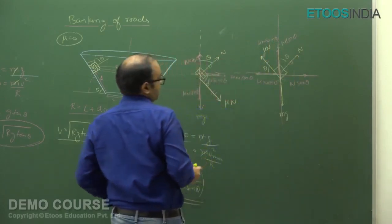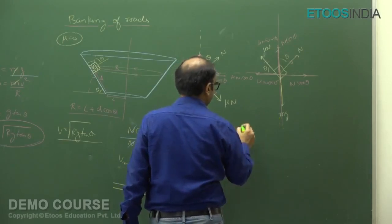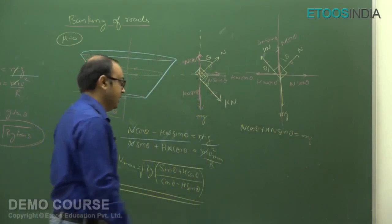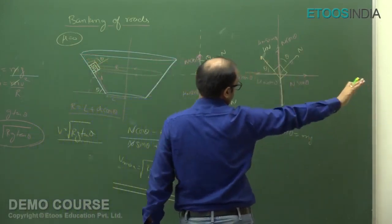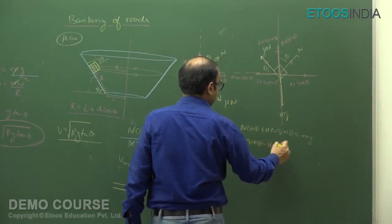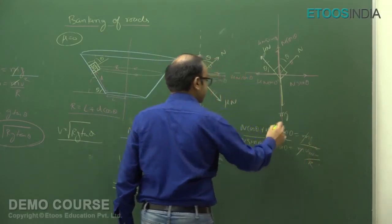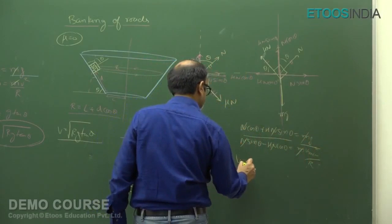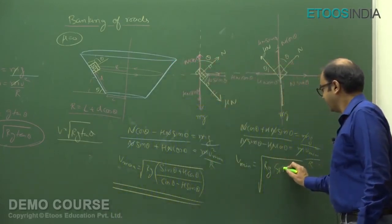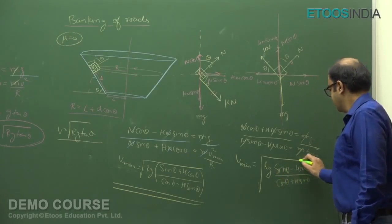Net radially inward force = Mv²_min/r: N sin theta − μN cos theta = Mv²_min/r. Dividing the two equations, m and m cancel, all normals cancel. Minimum velocity comes out to be v_min = √[rg · (sin theta − μ cos theta)/(cos theta + μ sin theta)].